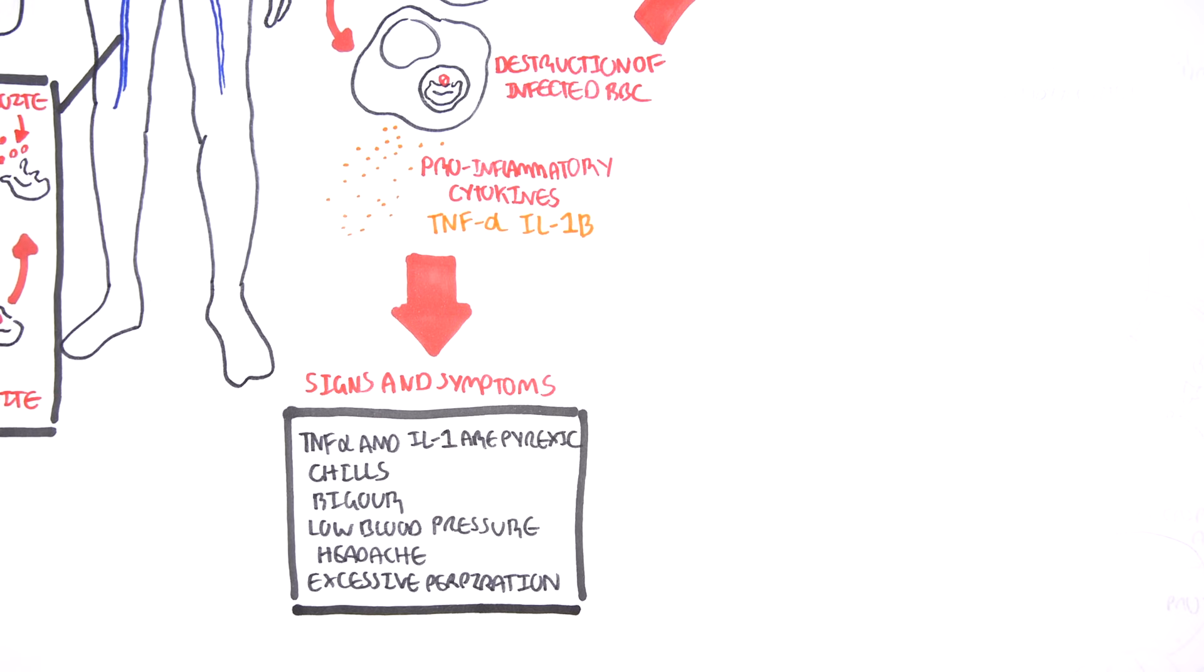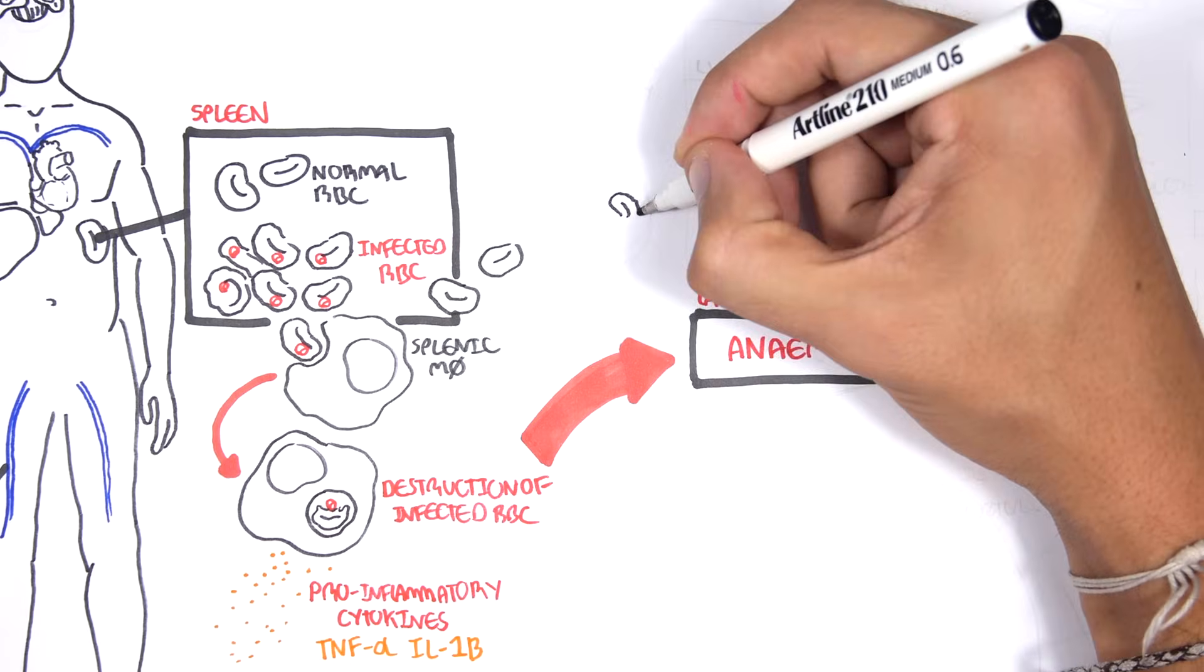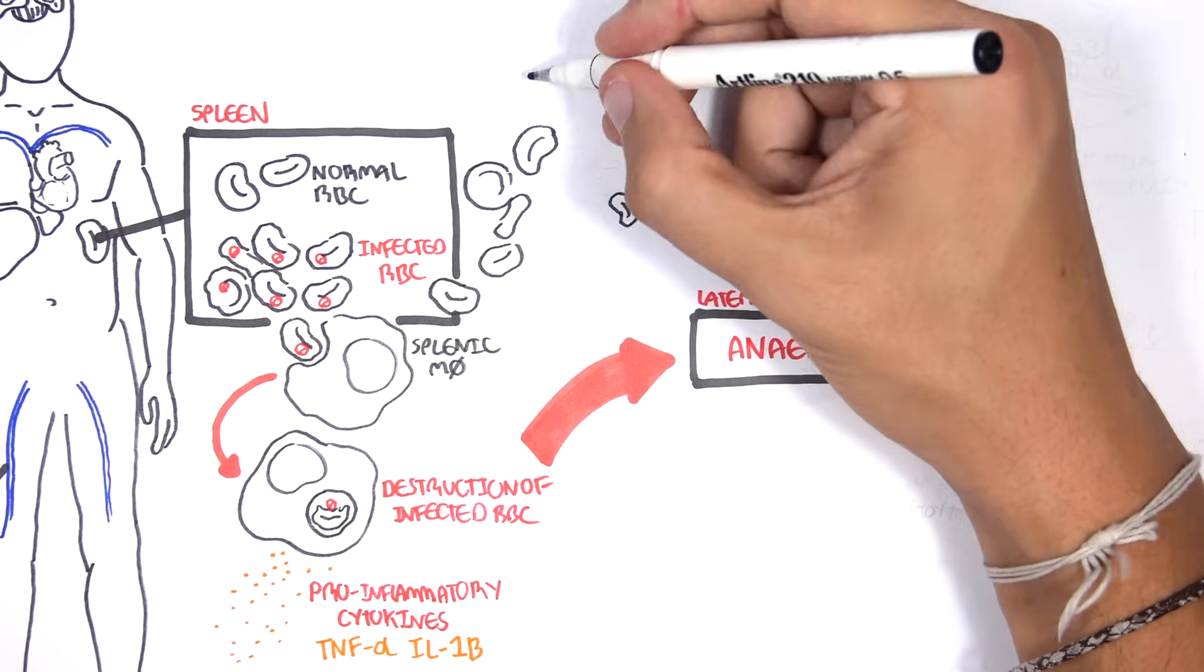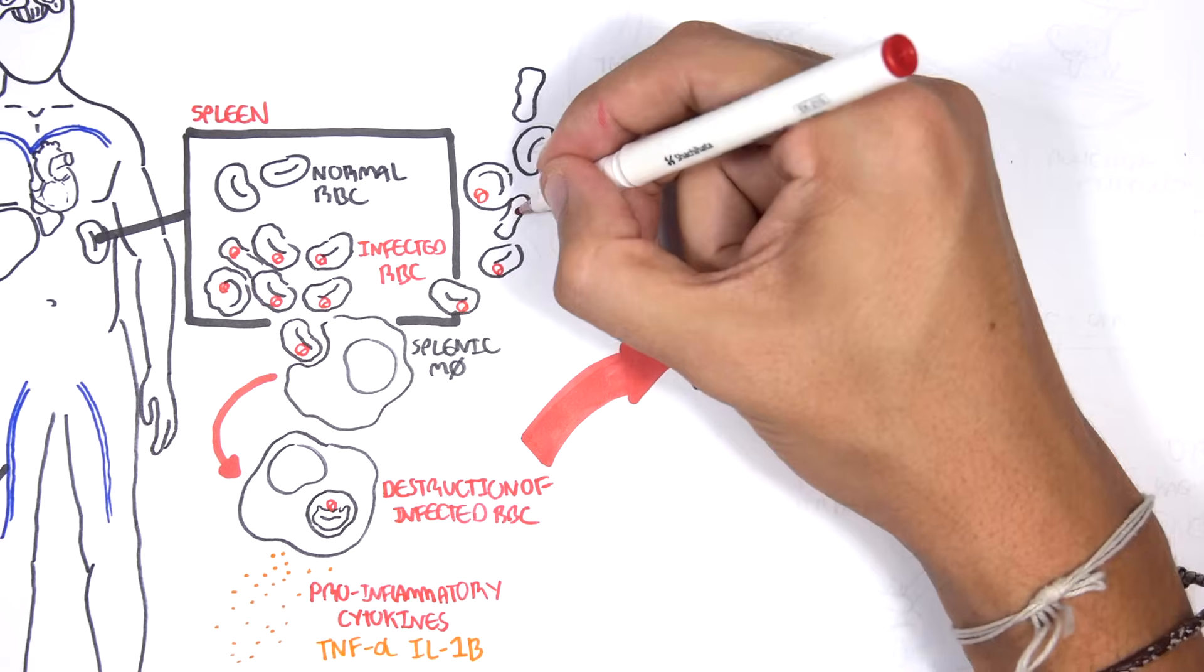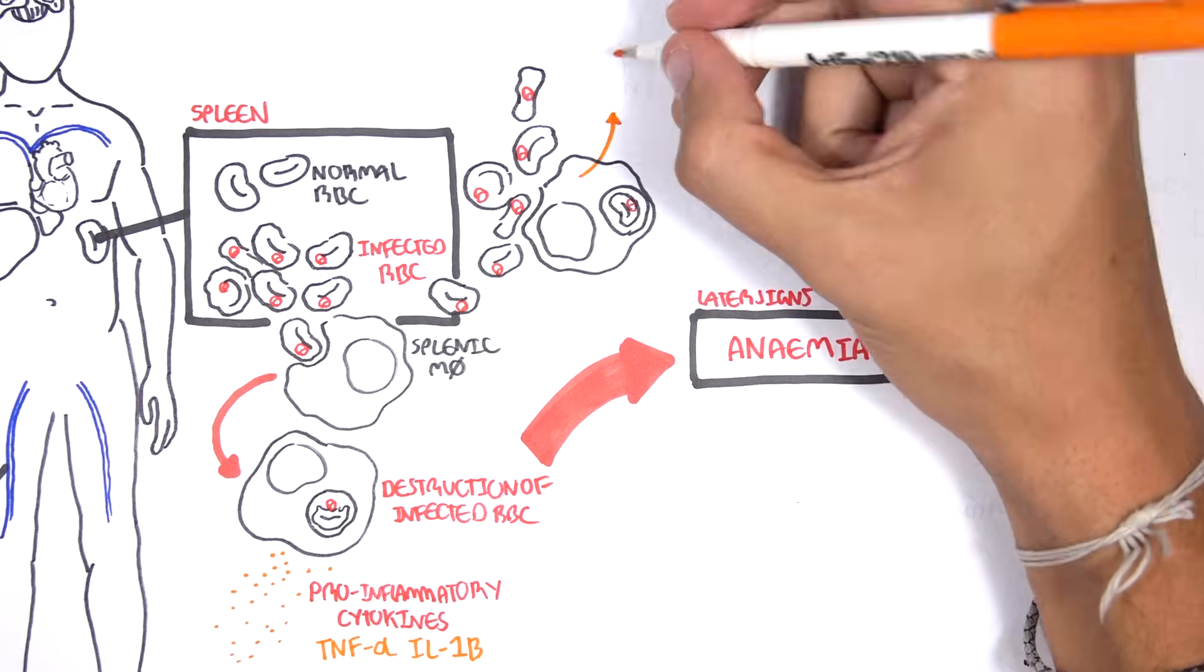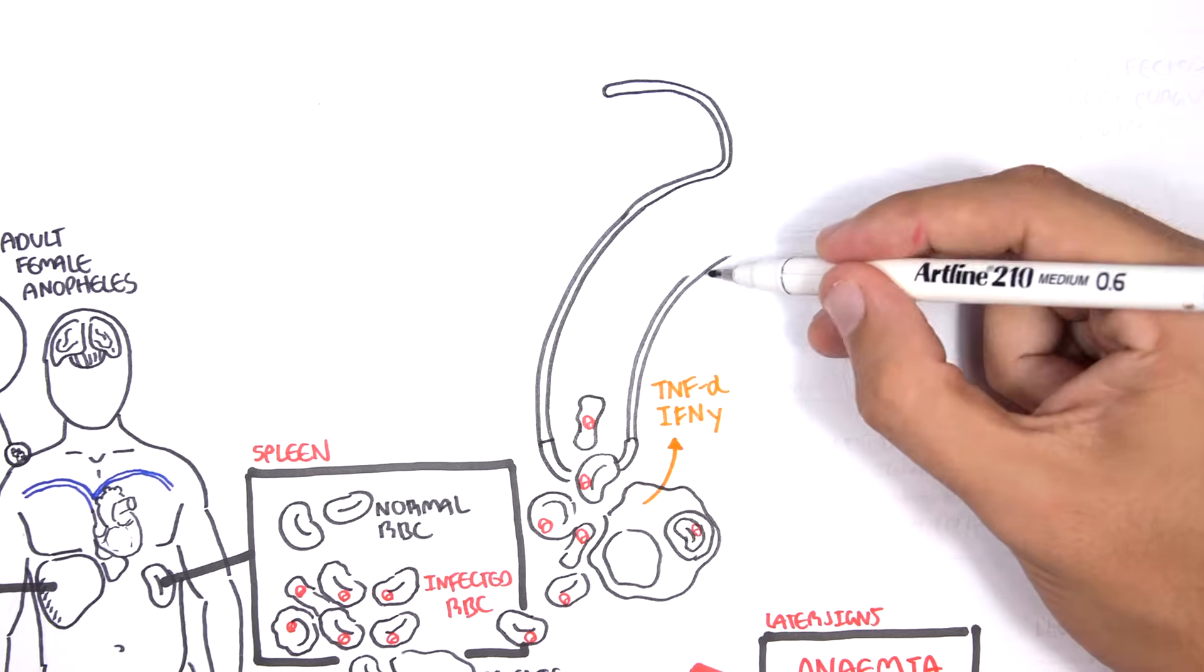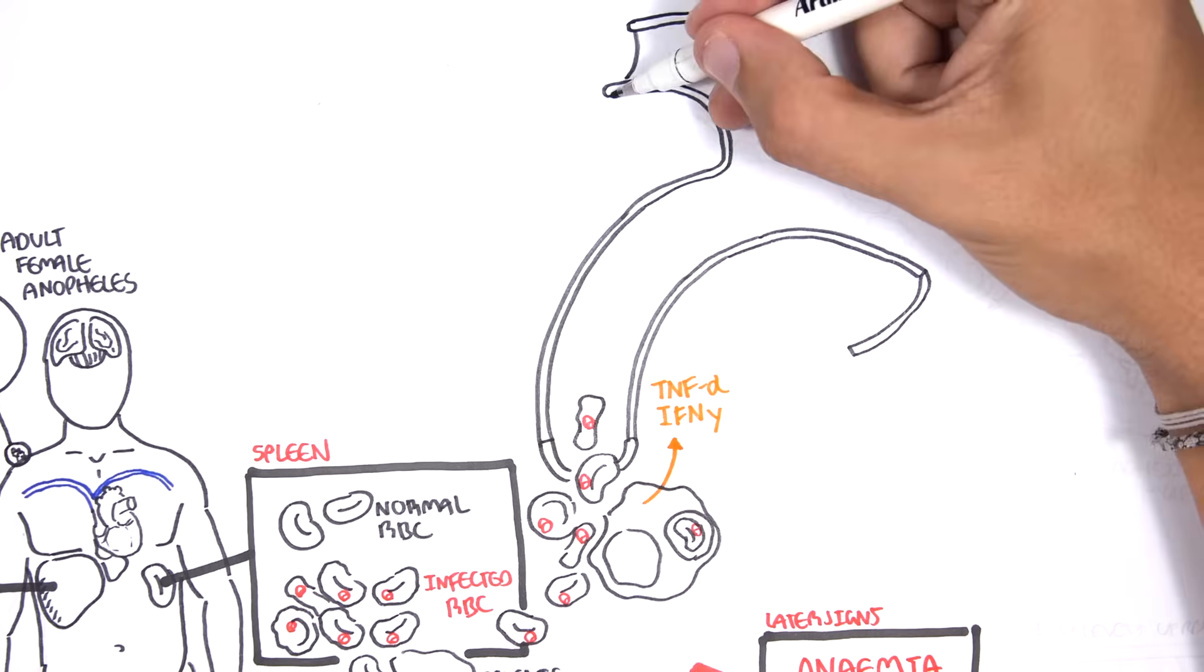Okay, so that was one event that occurs in the pathophysiology of malaria, which was the release of cytokines. So the macrophages and monocytes release TNF-alpha and interleukin-1b, but also they release interferon gamma, which takes us to the next pathological event that occurs in a malarial infection.